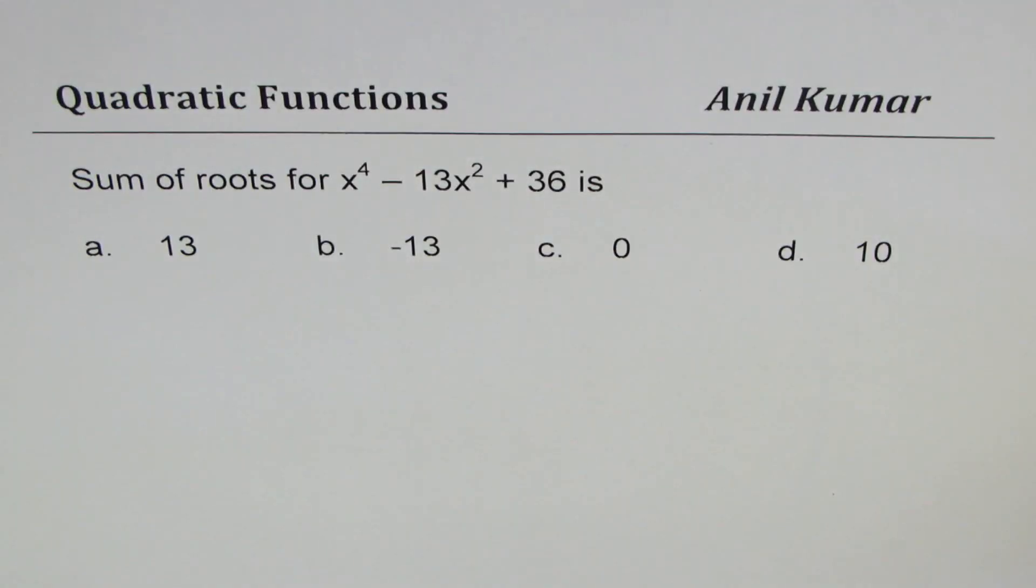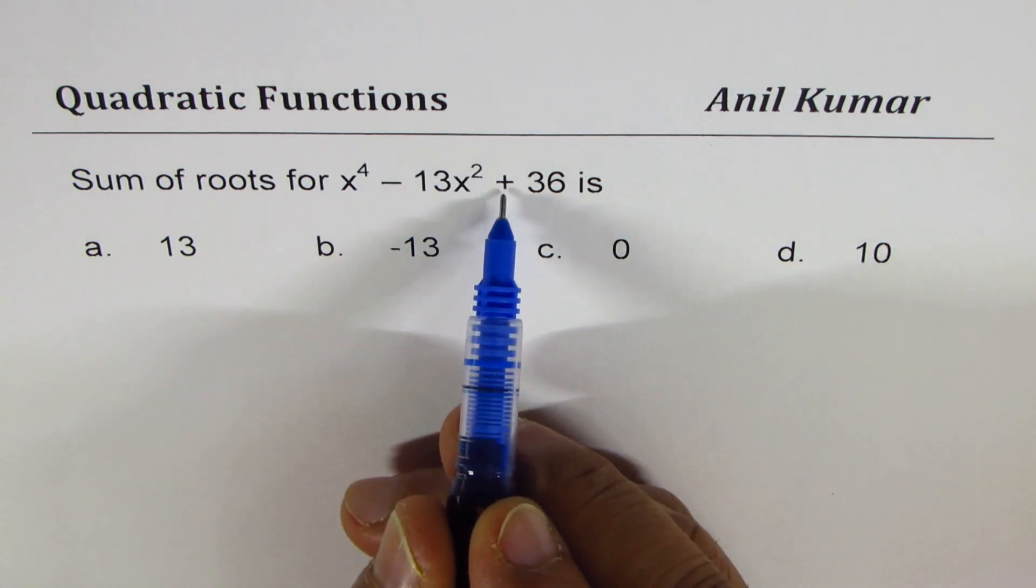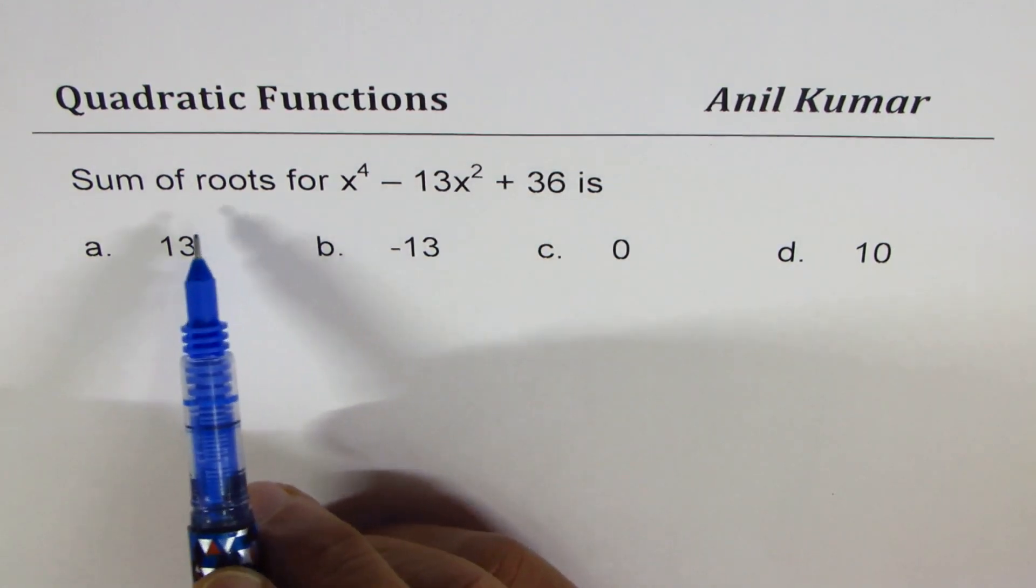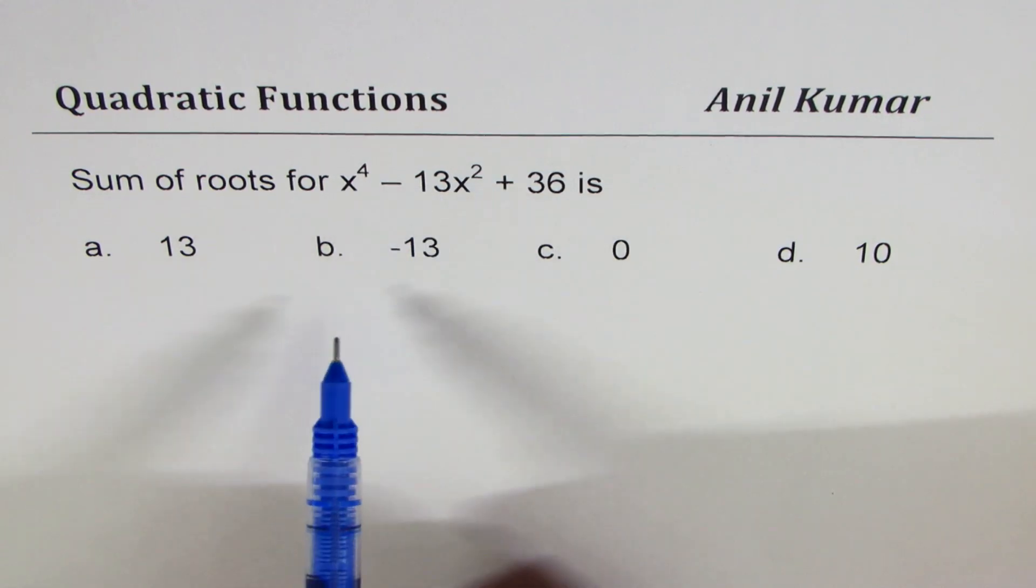The last in this series is find the sum of roots for x to the power of 4 minus 13x squared plus 36. So now it is to the power of 4 not 2. It is kind of different and we have similar kind of options before us. I would like you to pause the video, answer this question and then look into my suggestions.